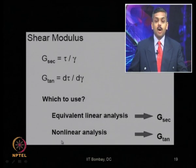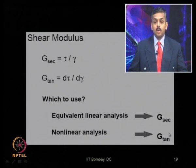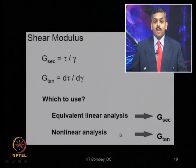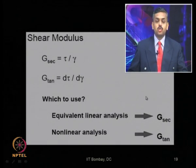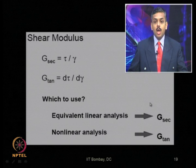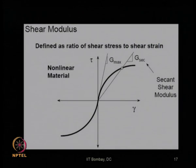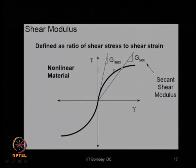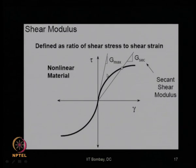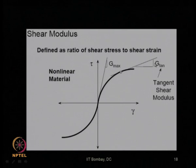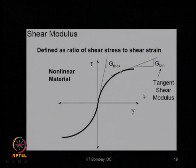For complete non-linear analysis, one must use G_tan. For linear analysis, G_max is used. G_max always gives the maximum value, G_secant is lower than G_max, and G_tan is the lowest of the three.